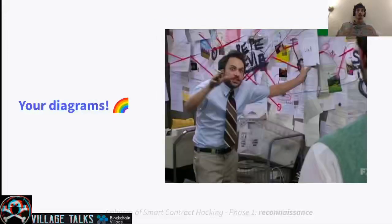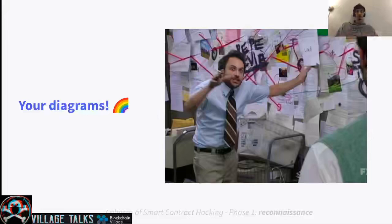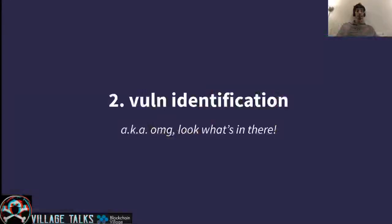Another thing that is super useful are diagrams. These are things that you can draw yourself and put together yourself, and they can really help you find several bugs in the code. They help you understand the relationships between different contracts, functions, and dynamics of the system. That's about it with reconnaissance — we have seen tools and manual things that you can use.